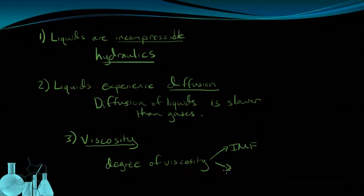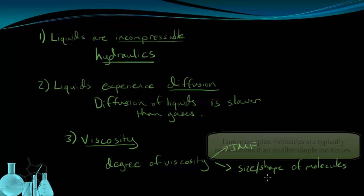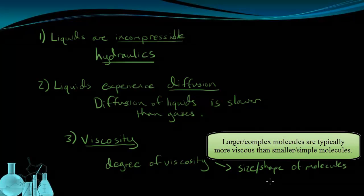The second thing that can affect how viscous the material is is the size or shape or combination of the two of its molecules. Larger molecules or more complex-looking molecules have difficulty moving past one another, and they end up being more viscous.